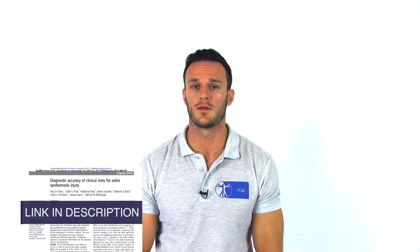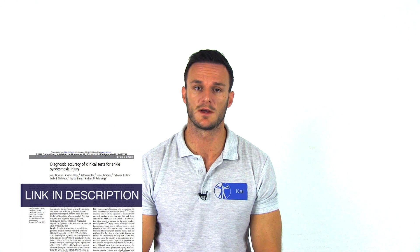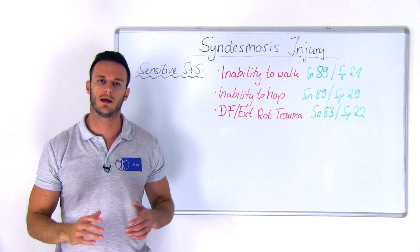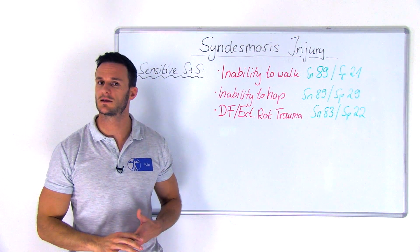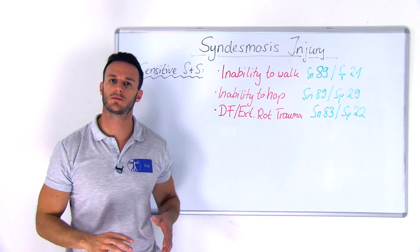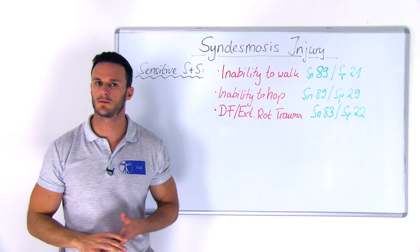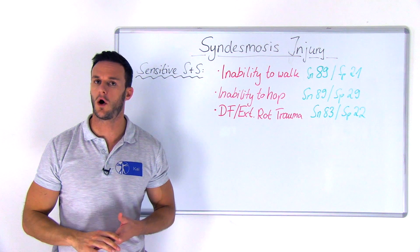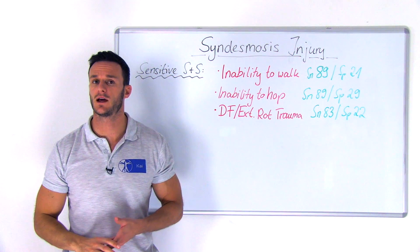Like in many other pathologies, our patient history can give us important clues as to whether the syndesmosis is injured or not. Sman et al. from 2015 described the following signs and symptoms with a high sensitivity that should be asked first: inability to walk with a sensitivity of 89% and a specificity of 21%, and inability to hop with a sensitivity of 89% and a specificity of 29%.